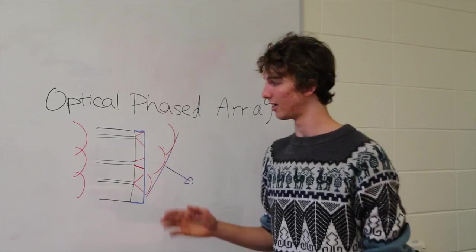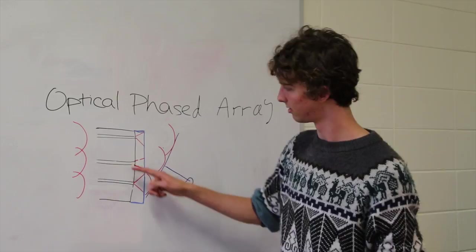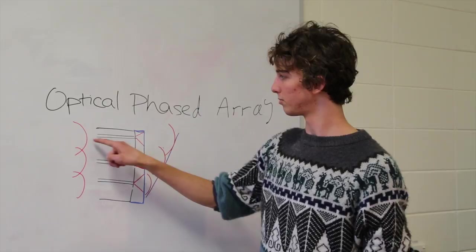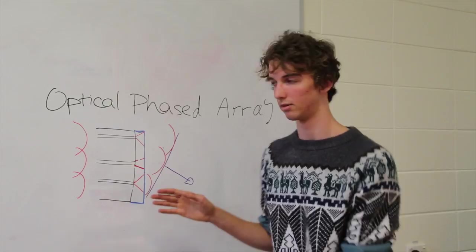This works as follows. Suppose we have our beam of light incident on an optical phased array and the top bit of the light we pass through and we don't delay that one. We just let that one pass through.